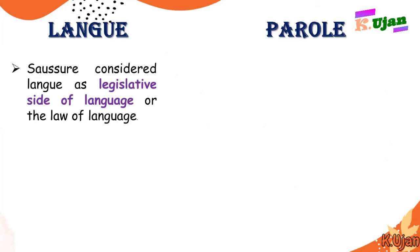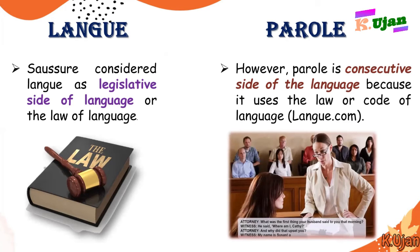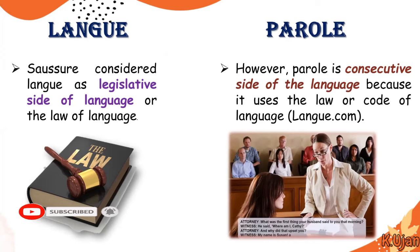Here is another example of these two terms. These two terms were differentiated by Saussure. Saussure conceived langue as the legislative side of language — the law of language which is in one's mind. All languages have their certain laws. But parole is the executive or consecutive side of language because it uses the law or code of language. Whenever we use that law, individual speakers use differently the same rules which they already have in their mind — that consecutive form is known as parole.